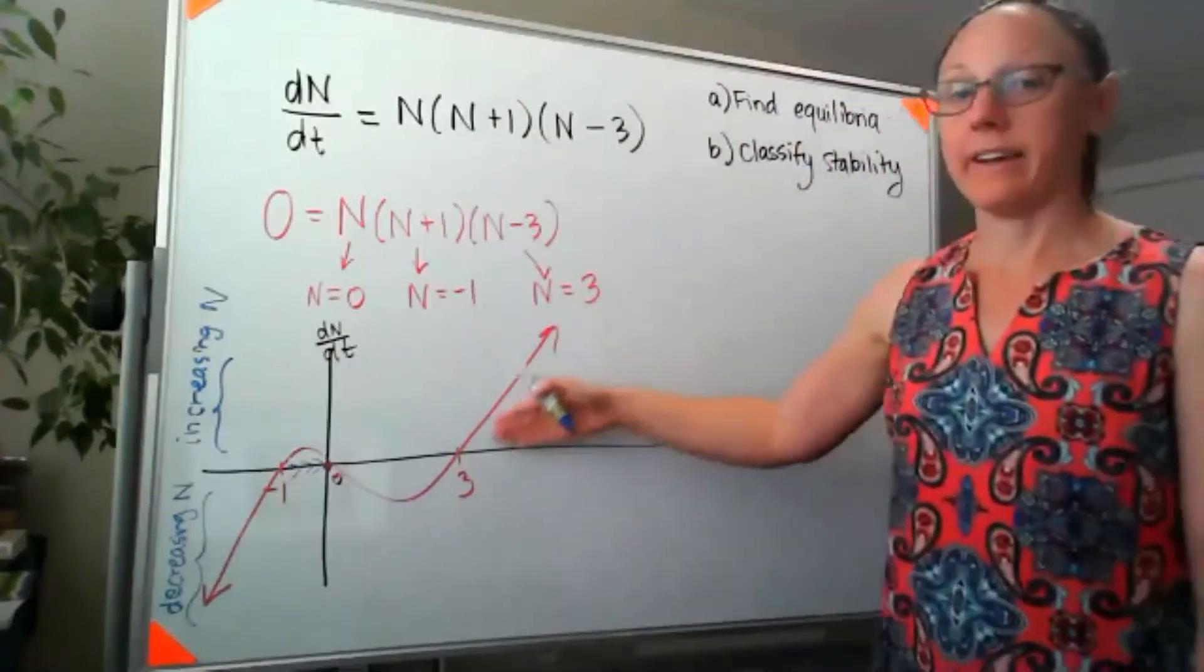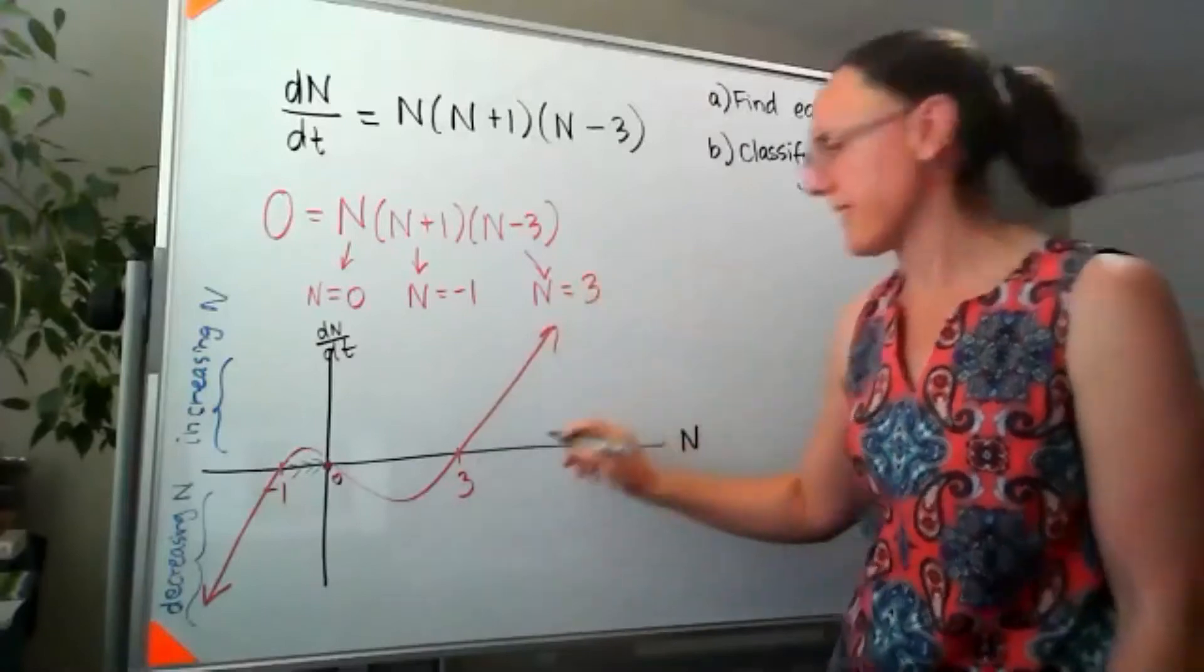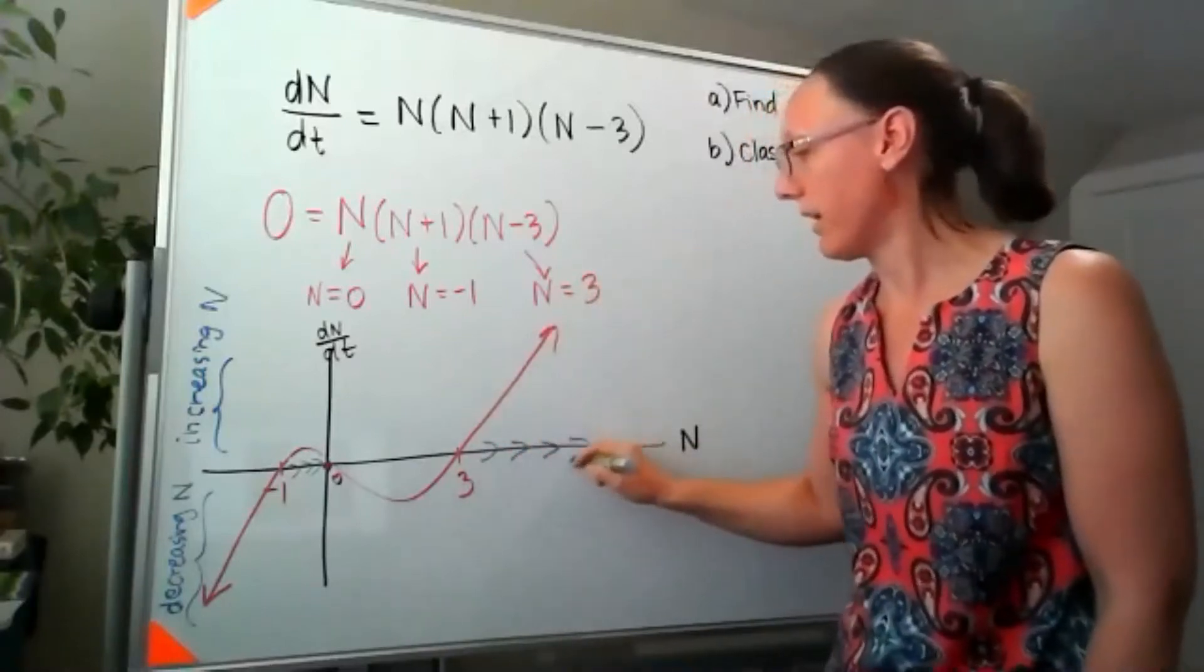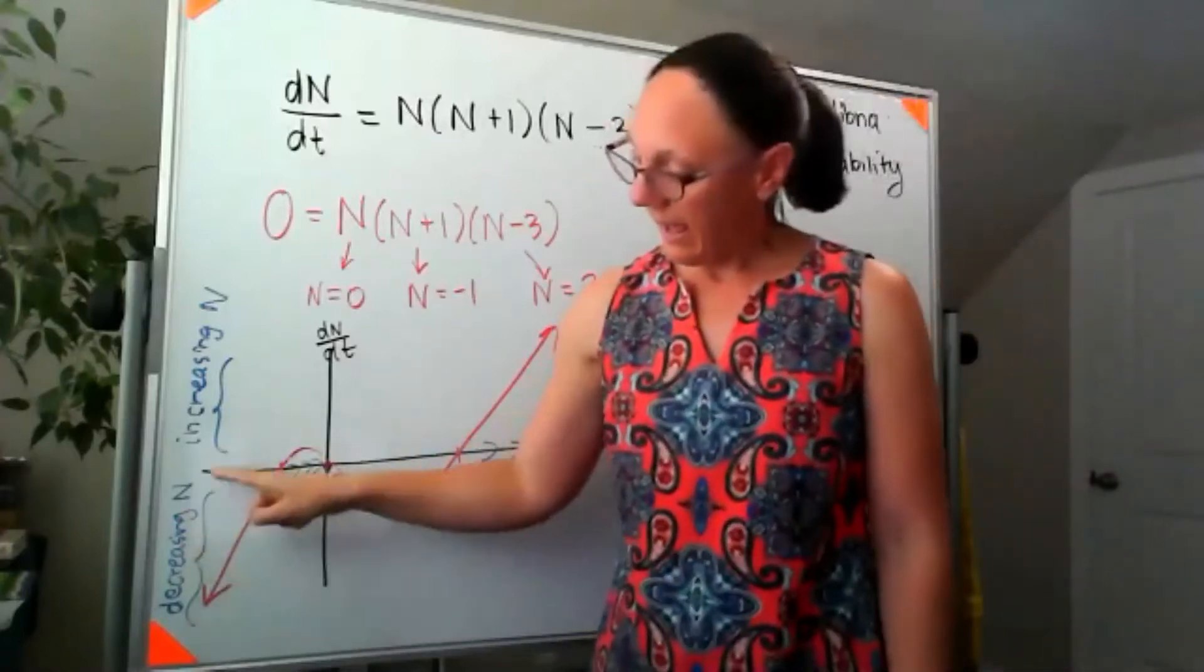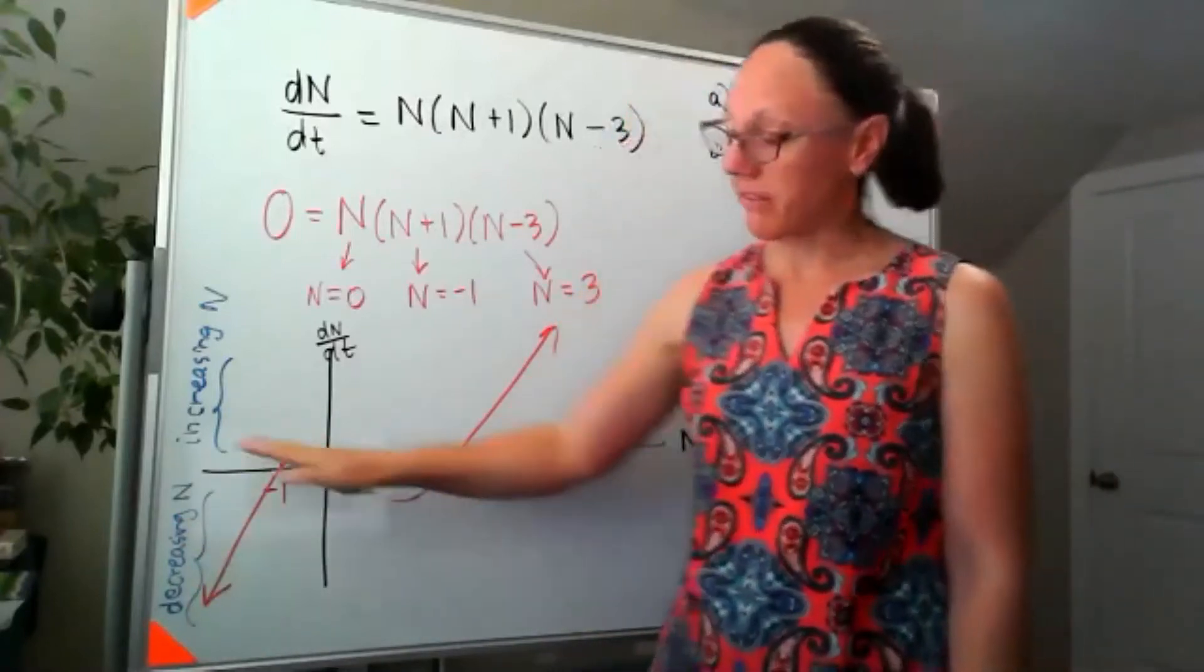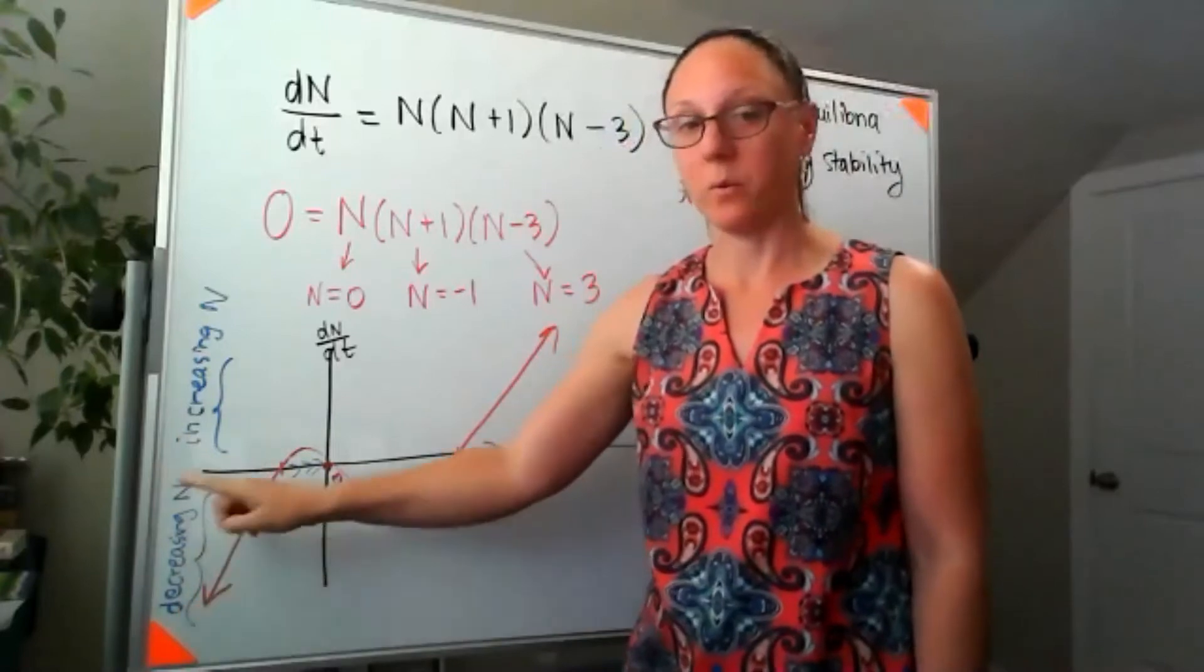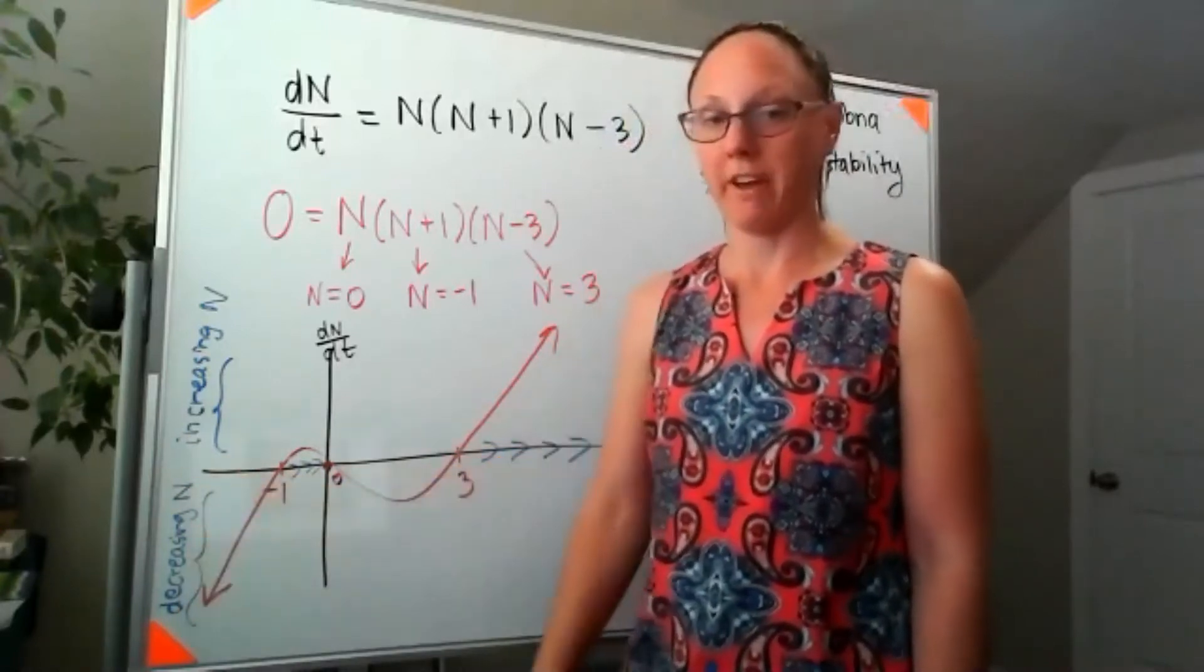Out here, again, because my curve is above the axis, I should be moving towards bigger n values. Everywhere that this red curve is below the axis, I know I should be moving towards decreasing or smaller n values.